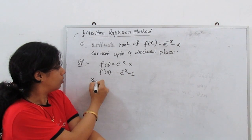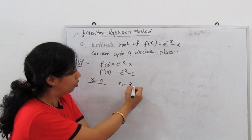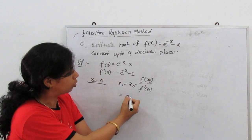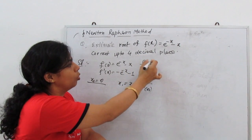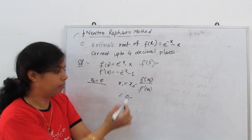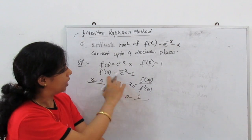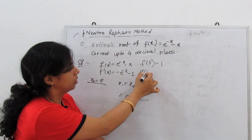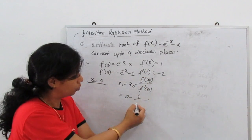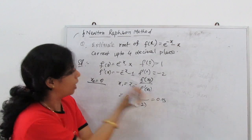Let us consider x₀ = 0. Then x₁ = x₀ − f(x₀)/f′(x₀). So f(x₀) at x=0: e^0 − 0 = 1. And f′(x₀) at x=0 gives −e^0 − 1 = −2. So x₁ = 0 − 1/(−2); the two negatives cancel, giving x₁ = 0.5.